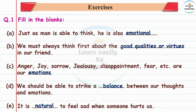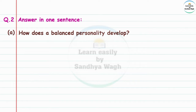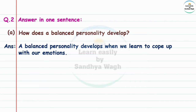Question number two: Answer in one sentence. First question: How does a balanced personality develop? Balance means santulit. Answer: A balanced personality develops when we learn to cope up with our emotions.